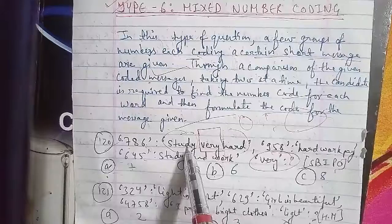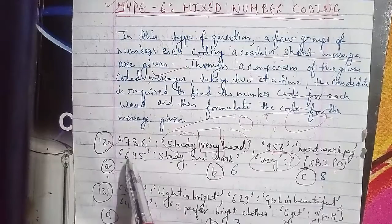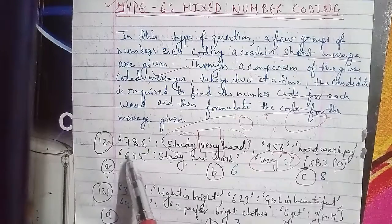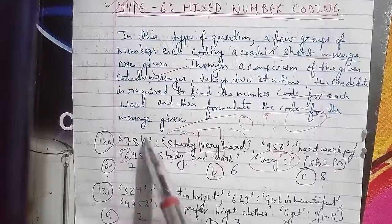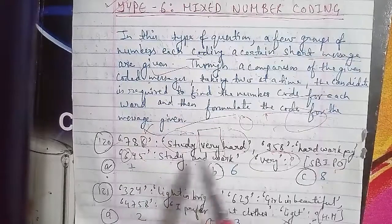It means 8 is also not satisfied, so the remaining 7 is coded as very. Option A is the right answer. This is our SBI PO question paper.